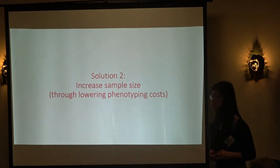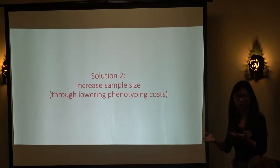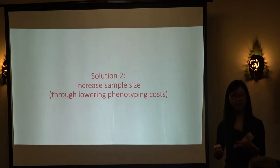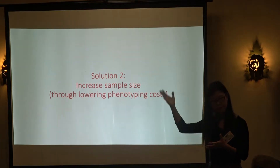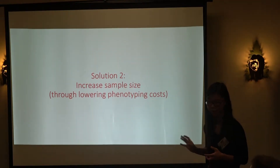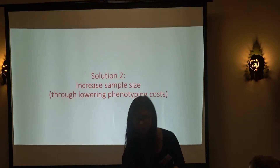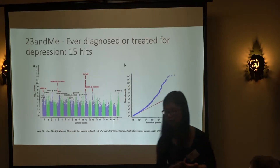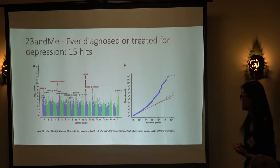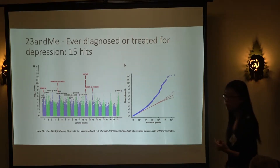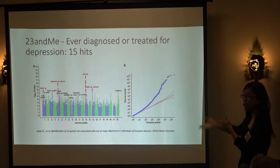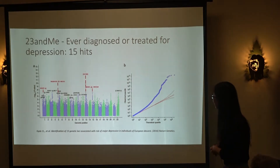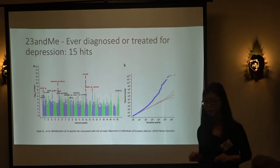Solution two — increasing sample size — could only be achieved by lowering phenotyping costs. Very shortly after Converge published in 2016, 23andMe published their paper on depression by asking one question: 'Have you ever been diagnosed or treated for depression?' This gave them 75,000 cases and 250,000 controls, with participants paying for their own genotyping. They got 15 hits for what they call depression.